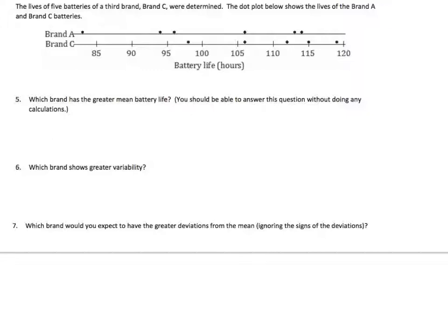But let's look at brand C. The lives of five batteries of a third brand, brand C, were determined. The dot plot shows the lives of the brand A and the brand C batteries. Which brand has the greater mean battery life? You should be able to answer this question without doing any calculations. The mean for brand A was 101. I think I'd remember that, maybe about right there. It looks like brand C, the mean is going to be a bit higher, maybe in that range somewhere. So, which brand has the higher mean? I'm going to say brand C. And that's just a visual. I didn't calculate anything.